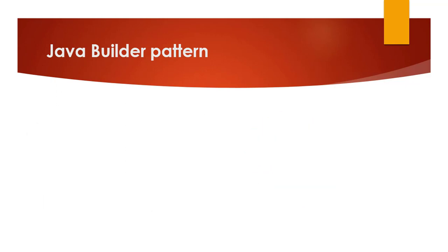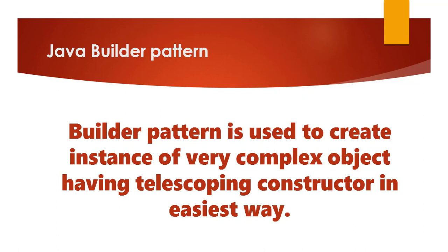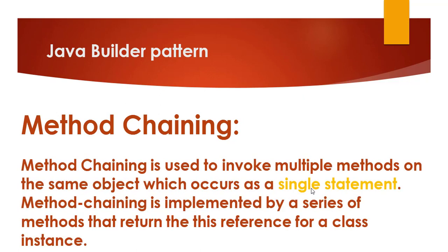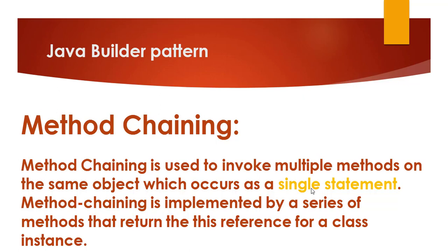Let's start using the Java Builder pattern. A Builder pattern is used to create an instance of a very complex object having a telescoping constructor in the easiest way — we have a complex object with many parameters and a very large or telescoping constructor. Before that, we need to understand the meaning of method chaining. Method chaining is used to invoke multiple methods on the same object which occurs as a single statement.